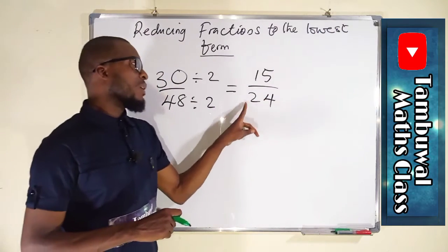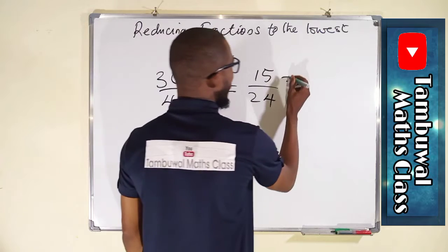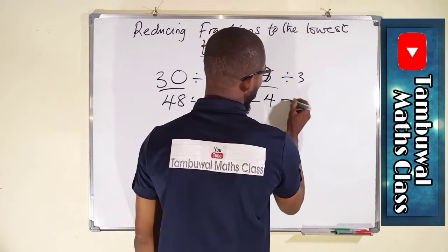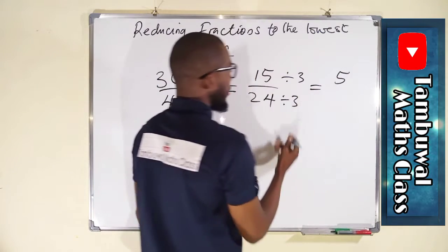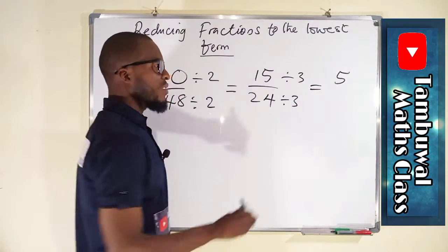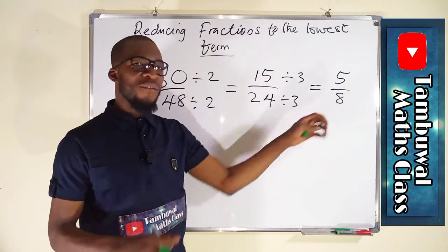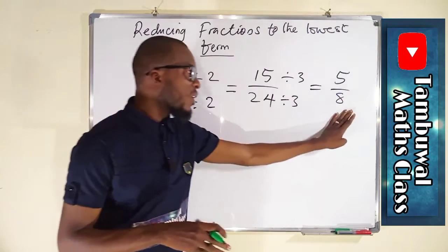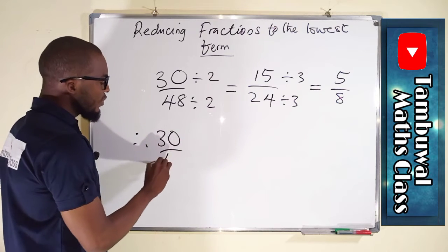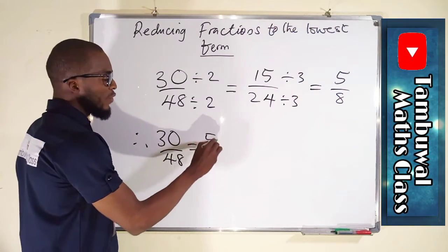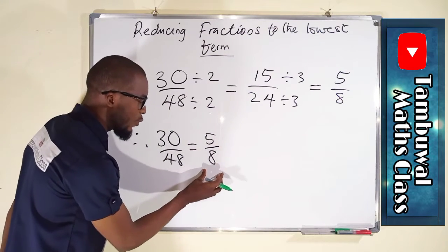We divide again — 3 can go into 15 and into 24, so we divide both by 3. 3 into 15 is 5, and 3 into 24 is 8. Since 5 and 8 have no common factor, we stop. Therefore 30 over 48 equals 5 over 8. They are equivalent, and this is the lowest form.